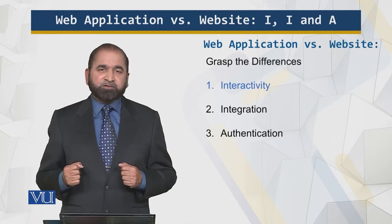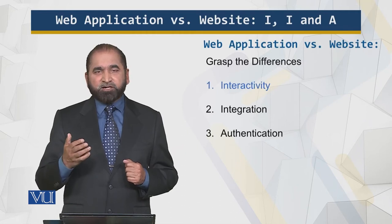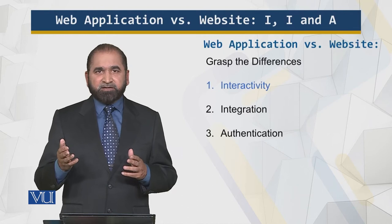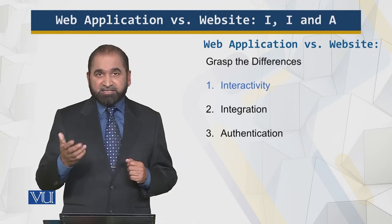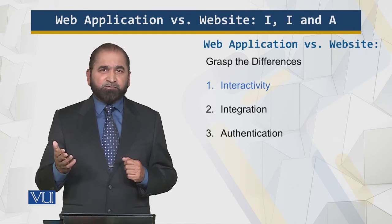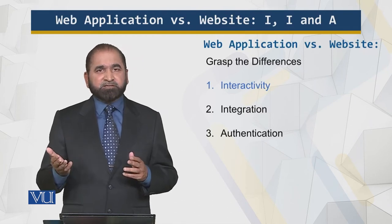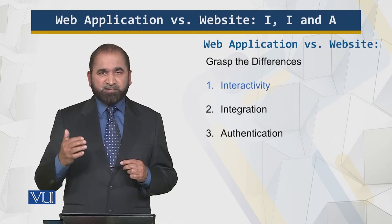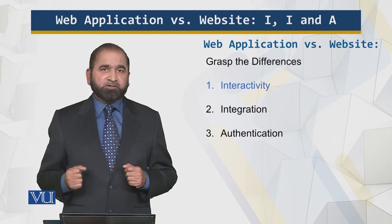For example, consider the case of a bank: I can type something in a box and get certain results — that is interactivity. Or consider the case of a social media website: I can set parameters and get news feeds, chat information, and other messages. That is the interactivity I'm talking about.